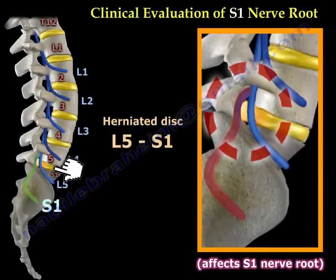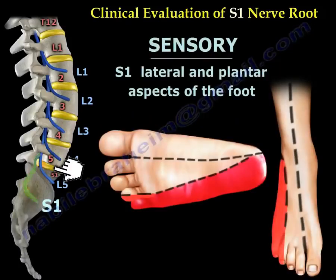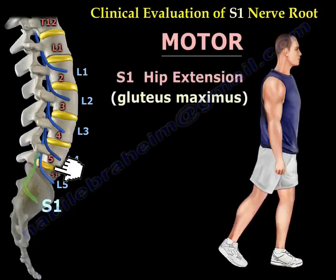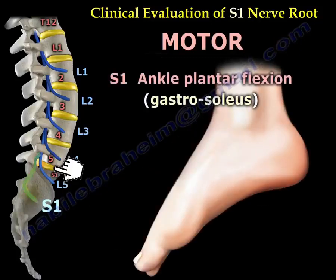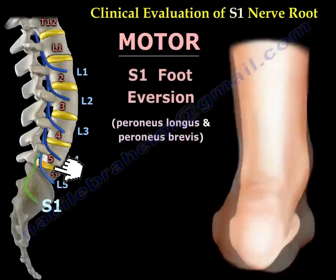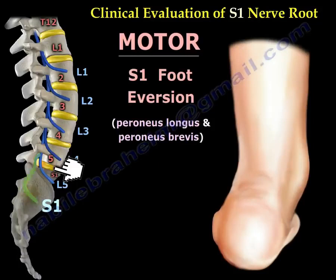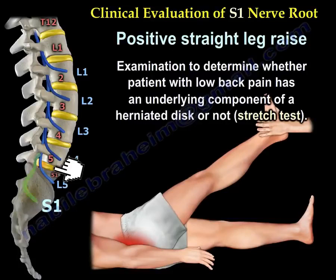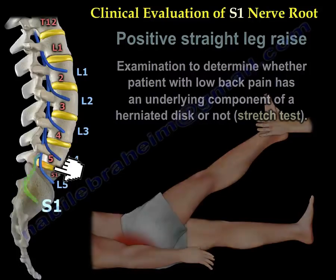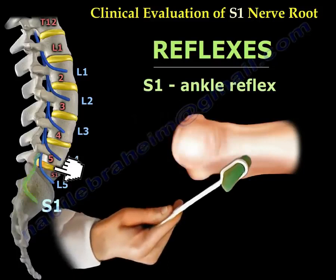Herniated disc between L5 and S1 will affect the S1 nerve root. The sensory of S1 will be the lateral and plantar aspect of the foot. For the motor: hip extension — gluteus maximus — and ankle plantar flexion, the gastrocnemius-soleus complex. We also use foot eversion — the peroneus longus and brevis. A positive straight leg raise is used to determine if the patient with low back pain has an underlying herniated disc component, called the stretch test. The reflex for S1 is the ankle reflex.